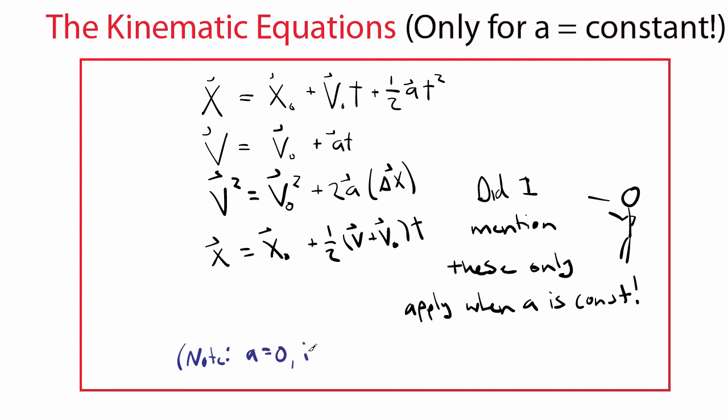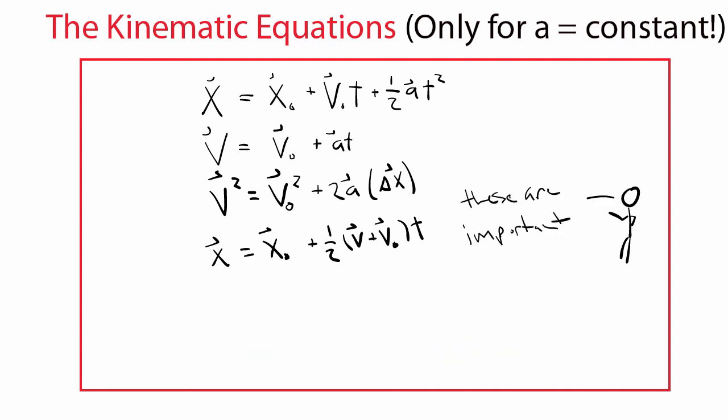And remember our discussion on constant velocity motion at the beginning of this video? Well, in that example, our acceleration must have been zero, and zero is a constant just like any other non-changing number. So our four equations can be used to solve for the super-special case of constant velocity motion as well.